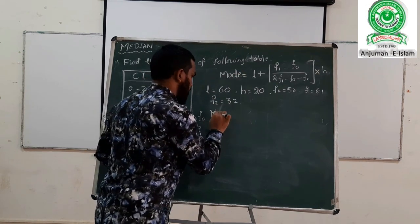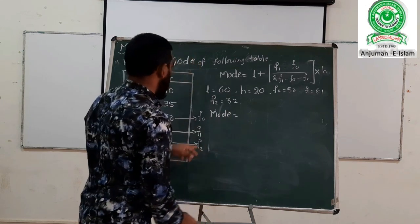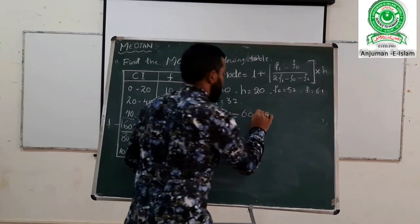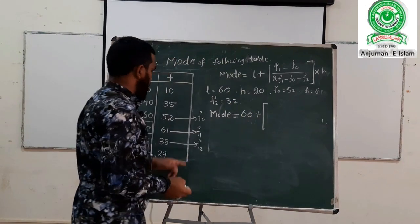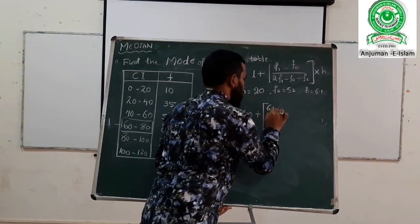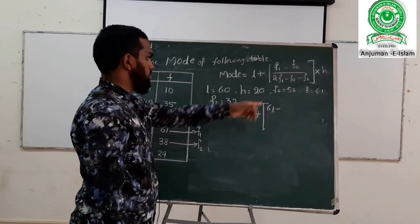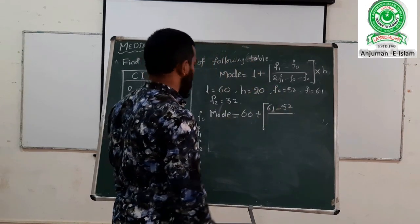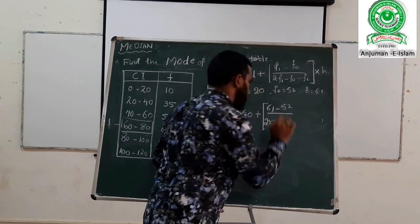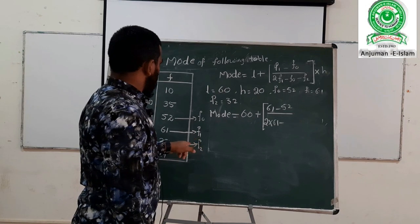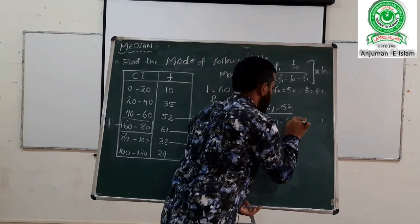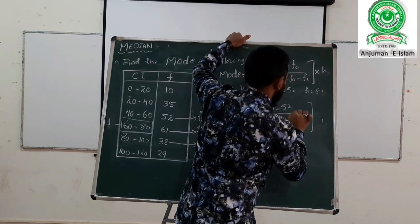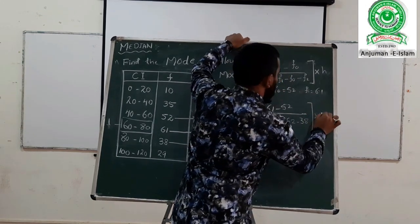The modal class is 60 to 80. So L equals 60. F1 is 61. F0 is 52. F2 is 38. Substituting: Mode = 60 + (61 − 52) / (2×61 − 52 − 38) × 20.